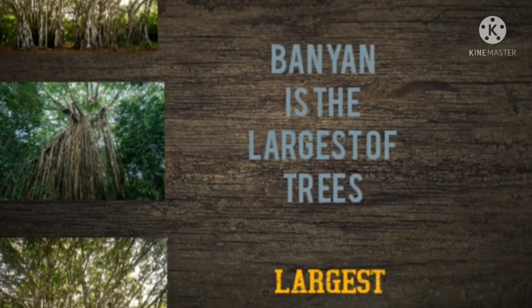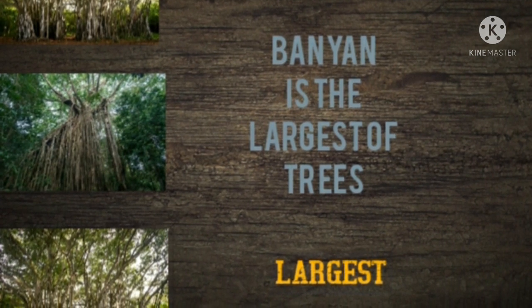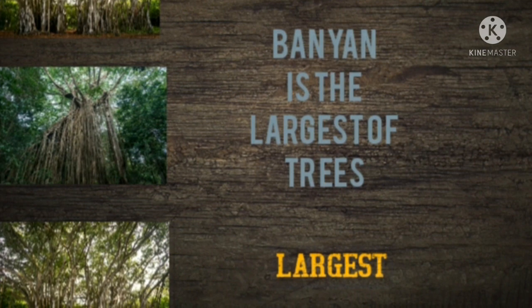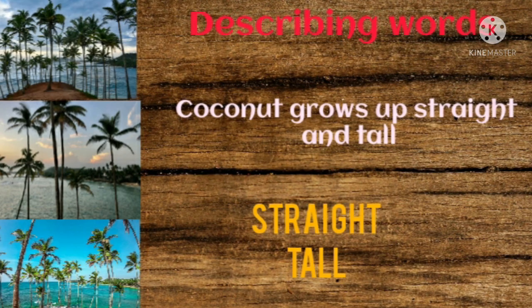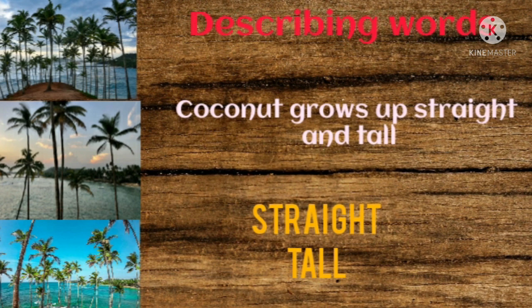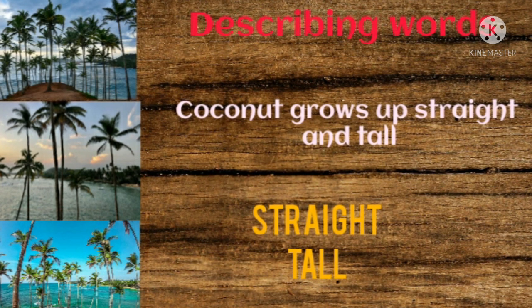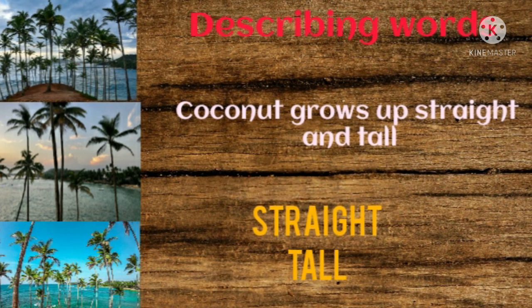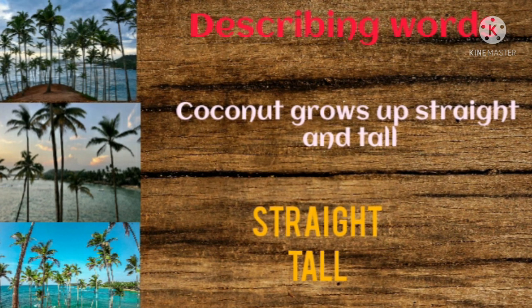The third line says 'the coconut grows up straight and tall.' How is the coconut tree? The coconut tree is straight and tall. So underline the describing words 'straight' and 'tall' for the coconut tree.